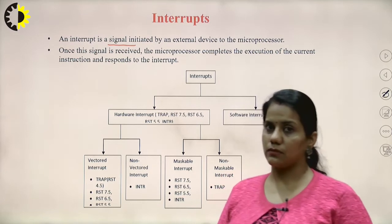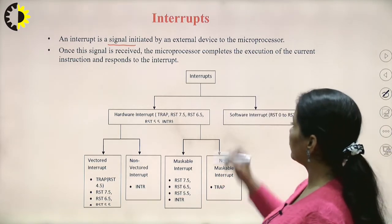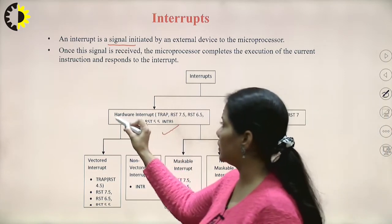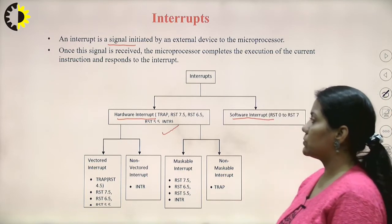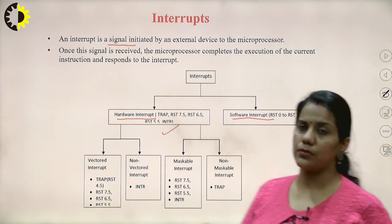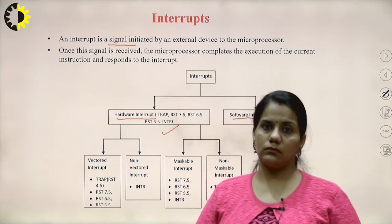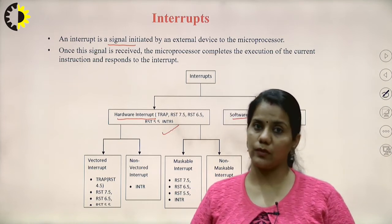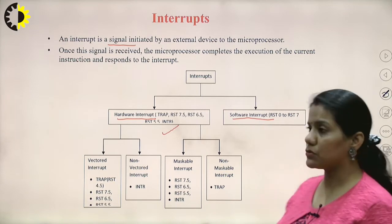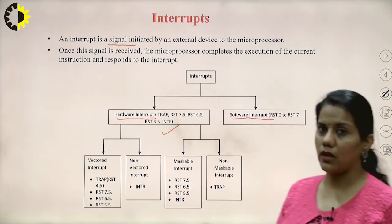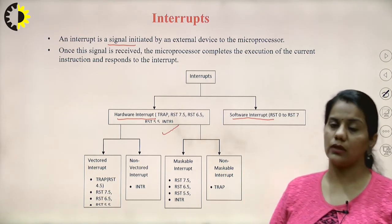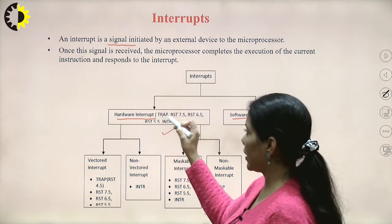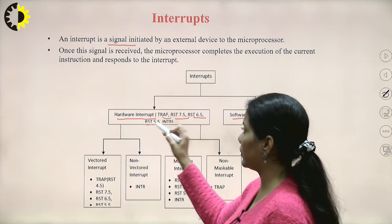How can we categorize these interrupts? Broadly speaking, interrupts are categorized as software and hardware interrupts. Hardware interrupts are those triggered to the main microprocessor through hardware pins. Software interrupts are those triggered using software, that is, using programming. Among the hardware interrupts there are TRAP, RST 7.5, 6.5, 5.5, and INTR.